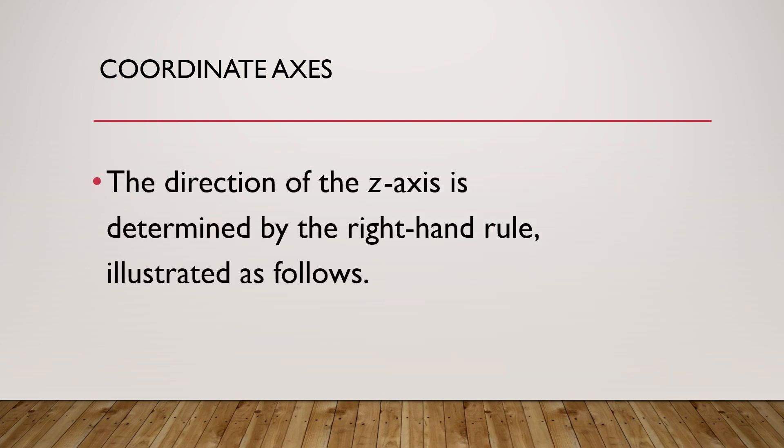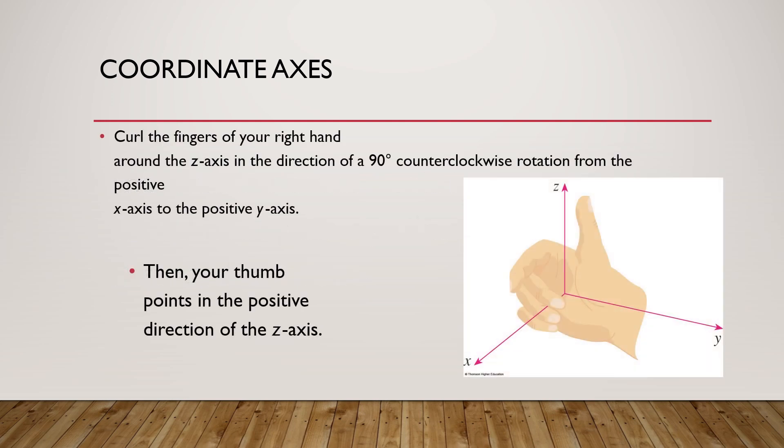The direction of z-axis is determined by the right hand rule. If you curl your fingers from x to y, the thumb will point towards the z-axis, positive z-axis.